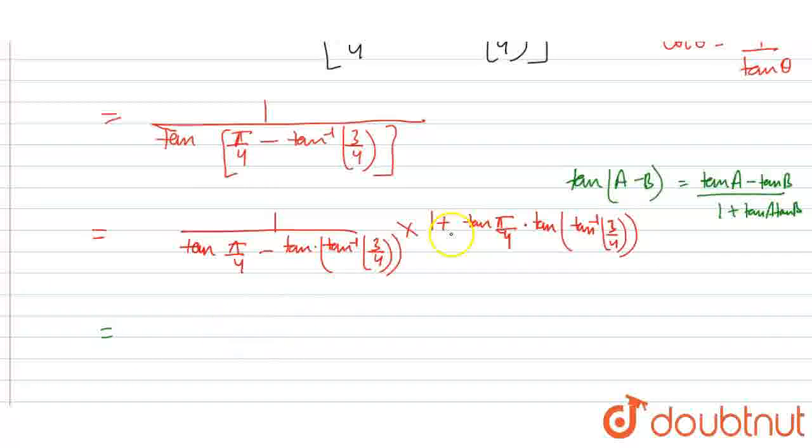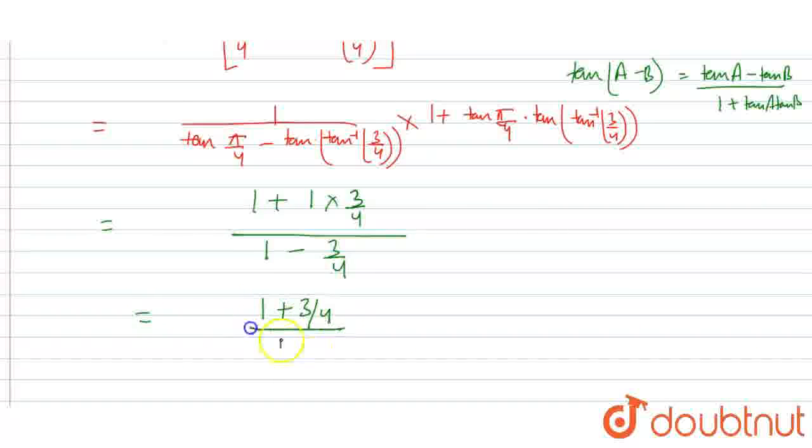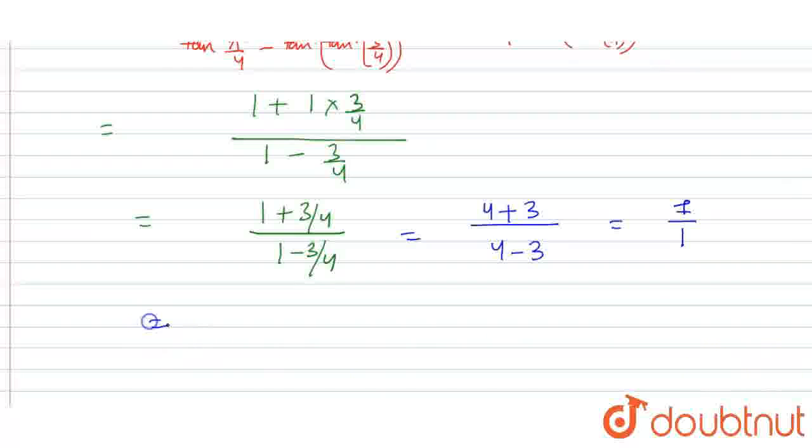Now, we have opened up the formula with the green color. Now, this is going to equal 1 plus tan pi/4 is 1 multiplied by tan and tan inverse will cancel out. So, we are going to get 3/4, whole upon tan of pi/4 is 1 again minus 3/4. So, eventually, we got 1 plus 3/4 upon 1 minus 3/4. Now, take 5 as the LCM. We are going to get 4 plus 3 upon 4 minus 3. So, that equals 7 upon 1 which equals 7 only.